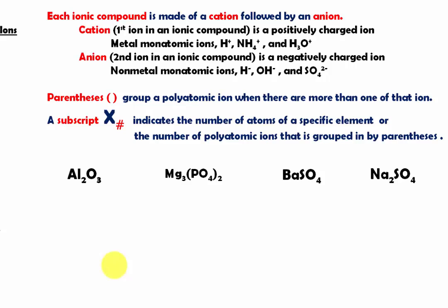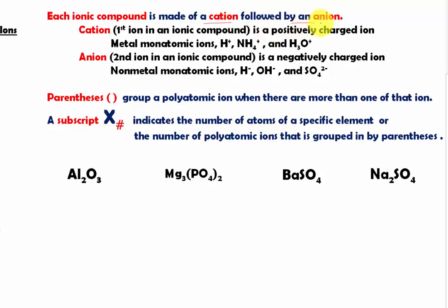In this lesson, we are going to learn about cations and anions and ionic compounds. First of all, we need to know that an ionic compound is made of cations, always, followed by anions. These are the two components of any ionic compound.